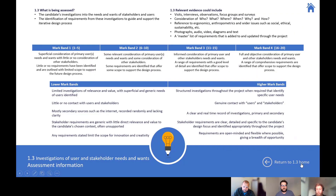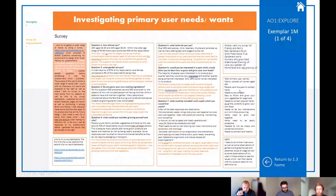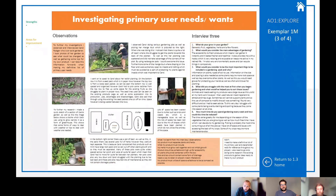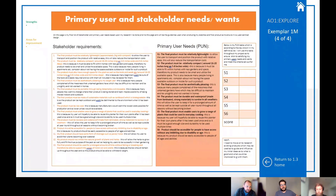That previous example is really good in terms of narrative. Looking back at the orange example, at the bottom of the page it says what she's going to do next, and on the following page those orange boxes at the top explain what she's going to do, why she's doing it, and what she's learned from the interviews. As an examiner or moderator, you can clearly see what she's thinking, the relevance of this primary research, and how she'll use this information to form her stakeholder requirements and primary user needs.